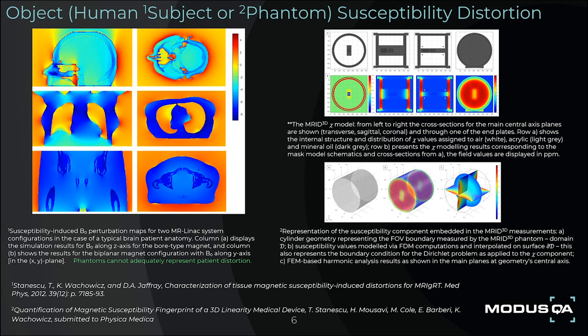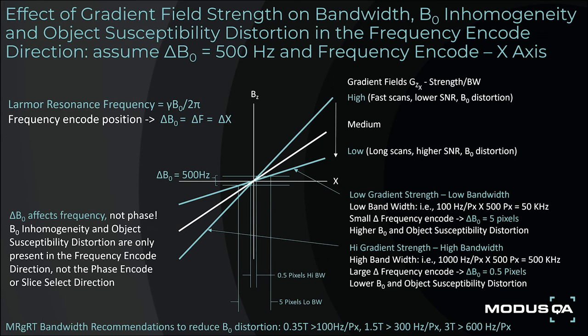Susceptibility-induced B0 perturbation maps of human subjects can be used to correct patient distortion, whereas phantom finite element models can be used to assign susceptibility values to air, plastic, and MR liquid contrast media to correct for phantom susceptibility distortion as a function of field strength, gradient strength, and frequency encode direction. Note that phantoms cannot adequately represent patient distortion. One of the simplest ways to manage geometric distortion arising from B0 inhomogeneity and object susceptibility-induced changes to B0 is to increase the gradient strength or bandwidth, which reduces the relative contribution to total distortion.